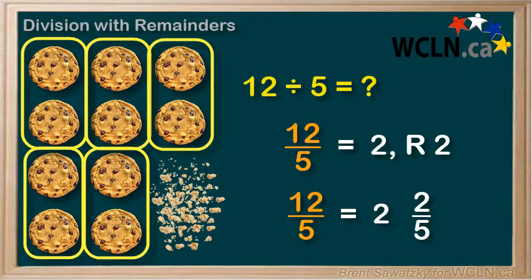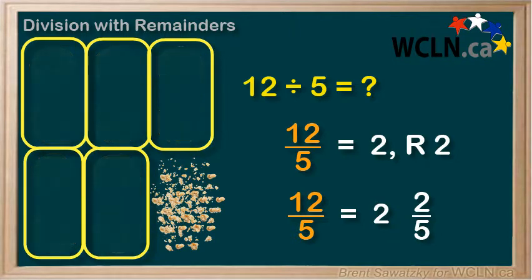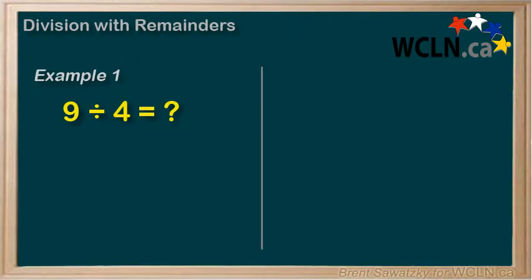Let's look at a couple of examples. Example 1: 9 divided by 4. How many times can 4 go into 9?